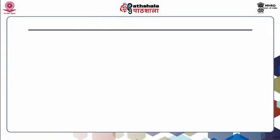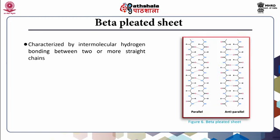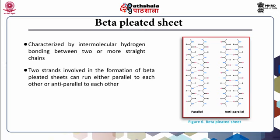The second form of secondary structure in enzymes is the beta pleated sheet. This structure is formed by intermolecular hydrogen bonding between two or more straight chains. The O atom of the CO peptide bond in one strand hydrogen bonds with the NH group of the peptide bond in the adjacent strand. The two strands involved in the formation of beta pleated sheets can run either parallel to each other or anti-parallel to each other.